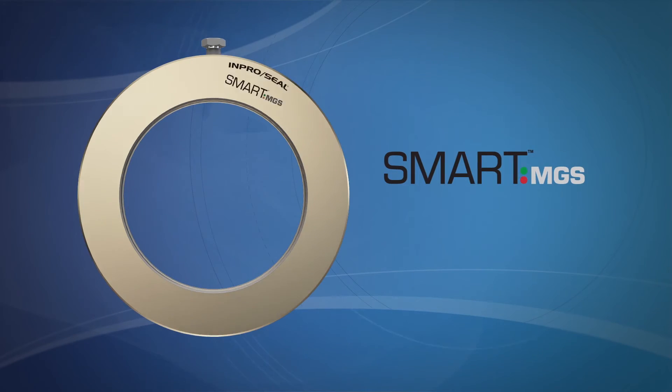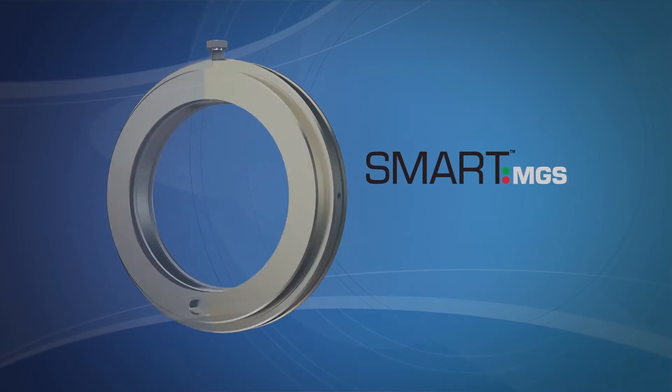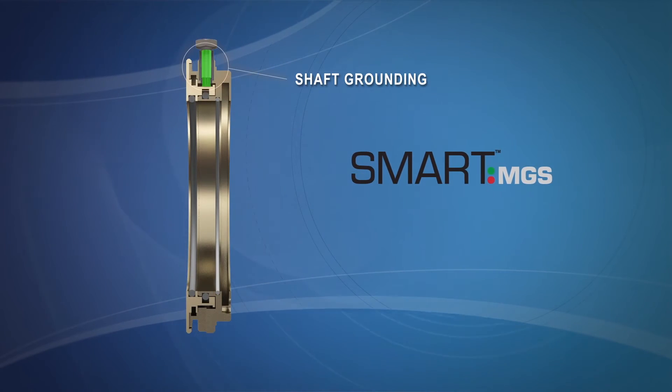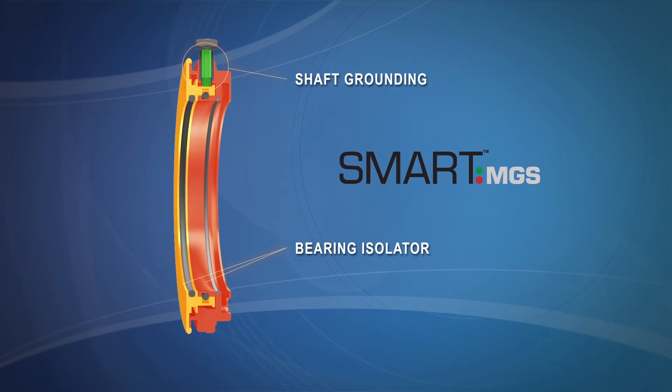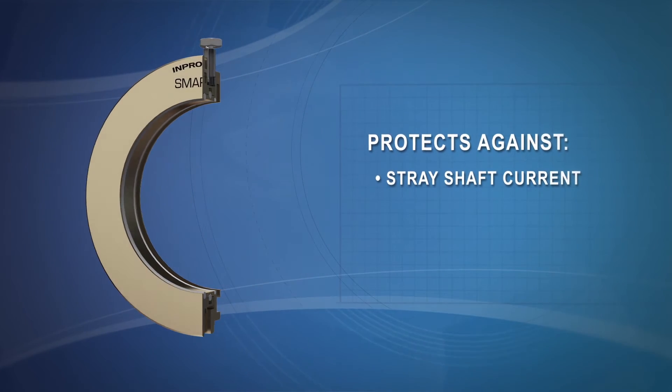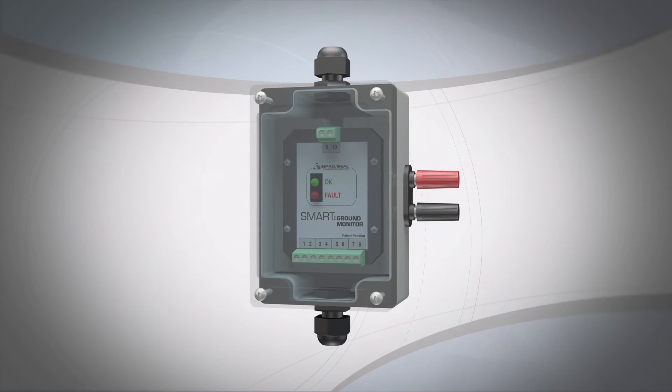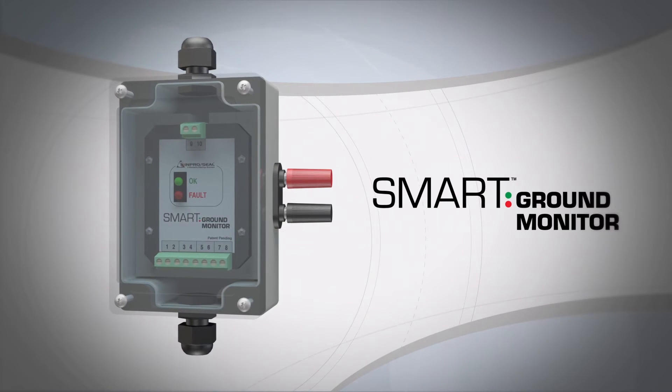For equipment operating in severe duty environments, the Smart MGS combines Smart Shaft Grounding technology with the complete protection of a bearing isolator to safeguard bearings against stray shaft currents as well as contamination ingress and lubrication loss. To ensure maximum protection against stray shaft currents,